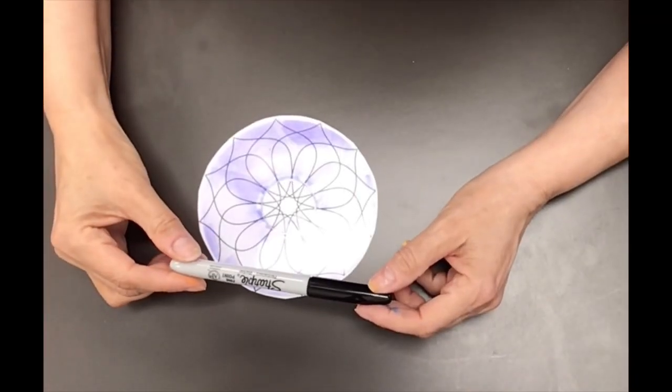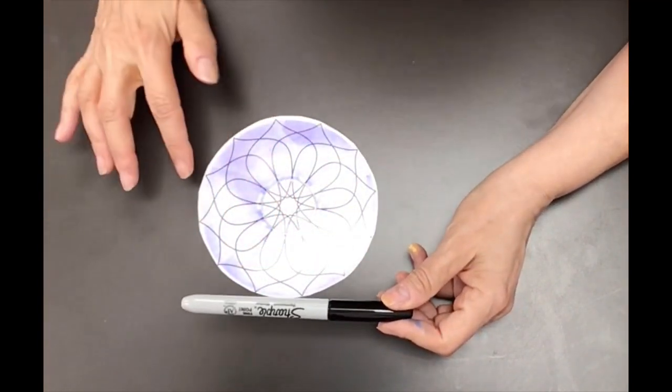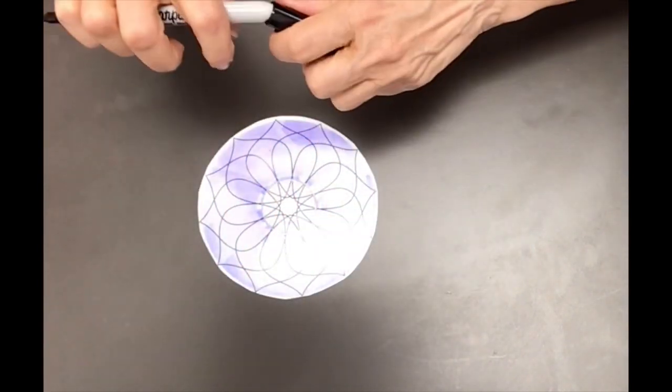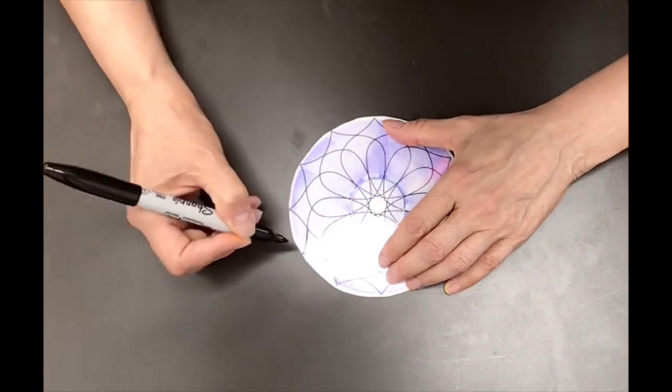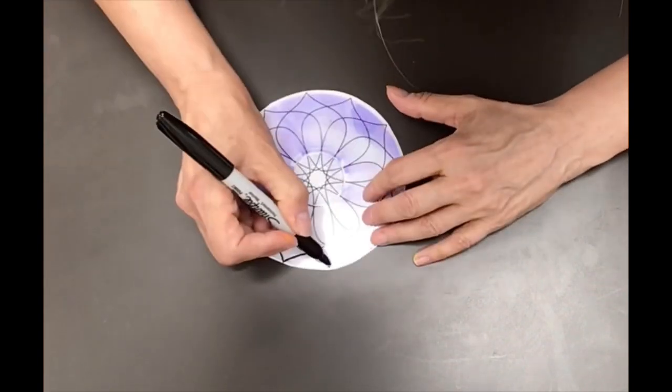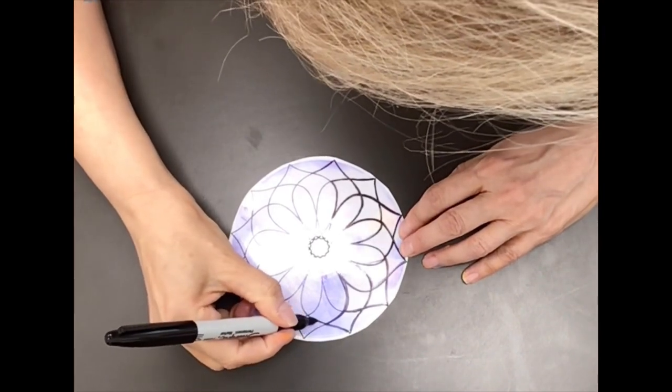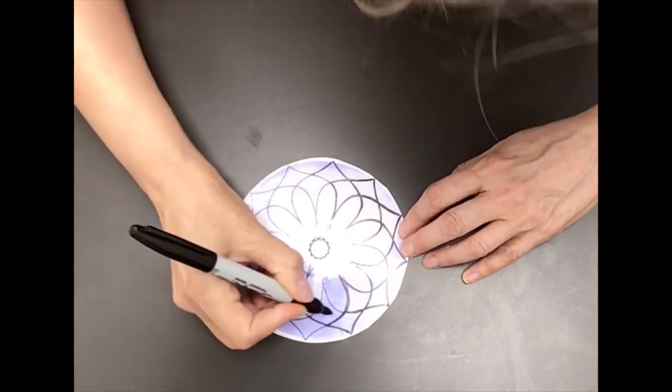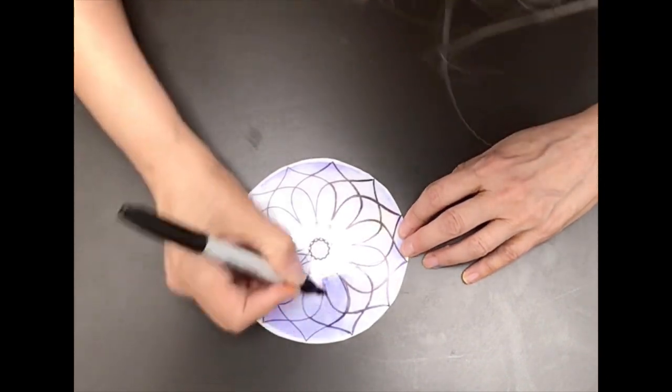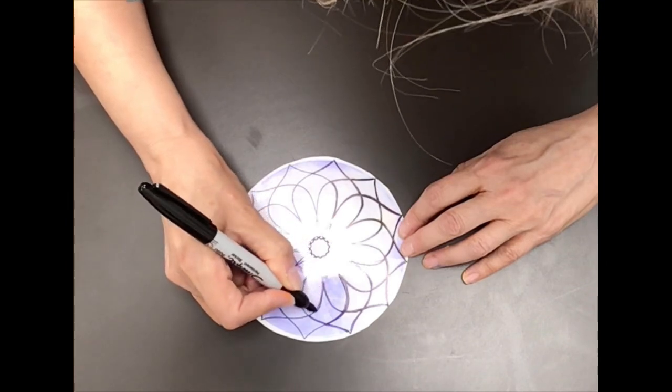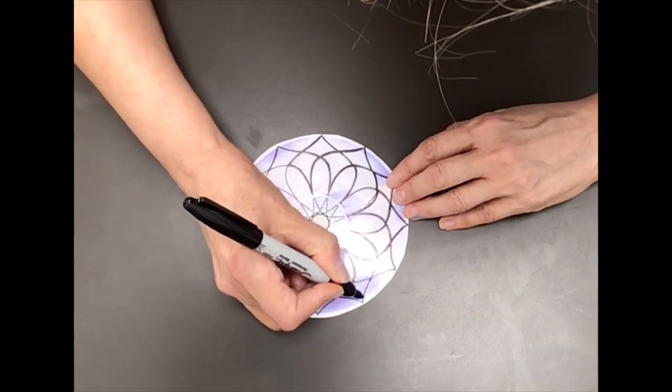Now take your Sharpie pen and you can start to trace the template design on top of your disc. When I'm tracing it, instead of trying to do one big line at one time, I try and break it down and trace the smaller lines. I find this works best for me.